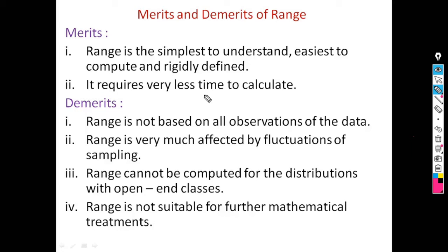Demerits of range: first, range is not based on all observations of the data. As the definition is L minus S, we consider only two observations — the largest and smallest — and the remaining observations are not considered. Also, range is very much affected by fluctuations of sampling.